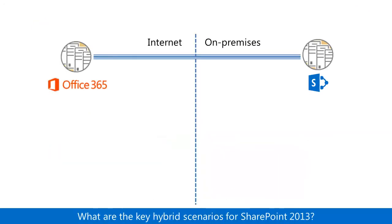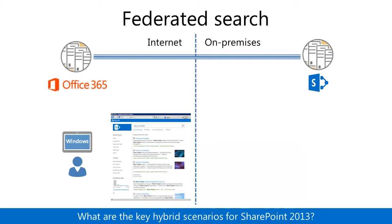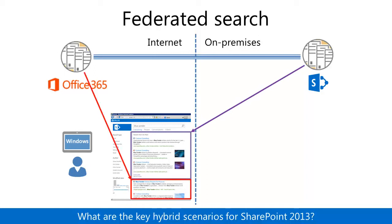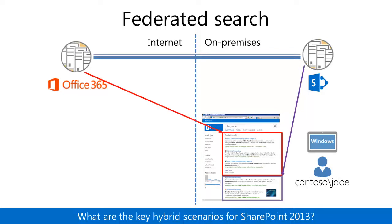Now let's examine the key hybrid scenarios for SharePoint 2013. With federated search, users can obtain search results for resources on both farms. For example, the SharePoint Online user can see the on-premises search results and the online search results. Similarly, the on-premises user can see the SharePoint Online search results and the on-premises search results.